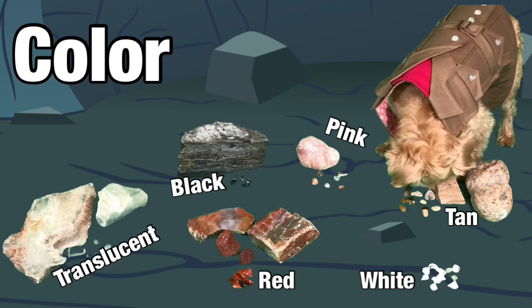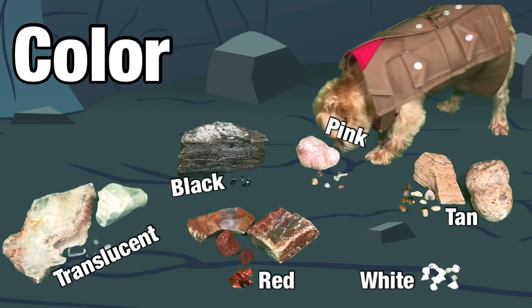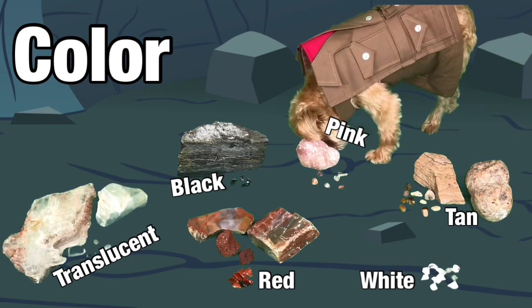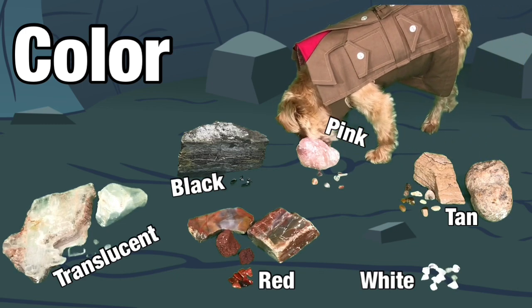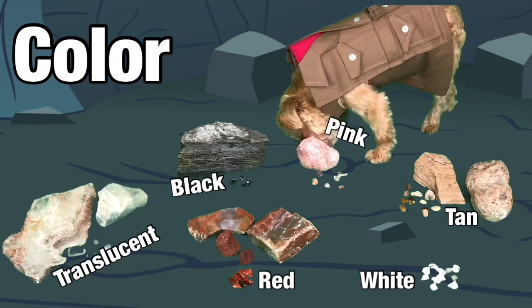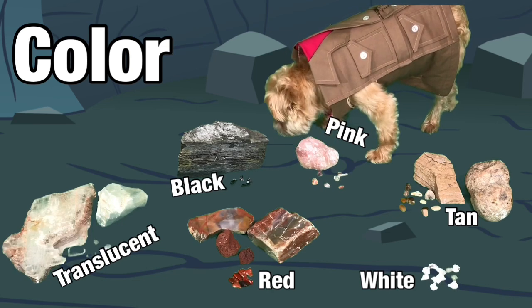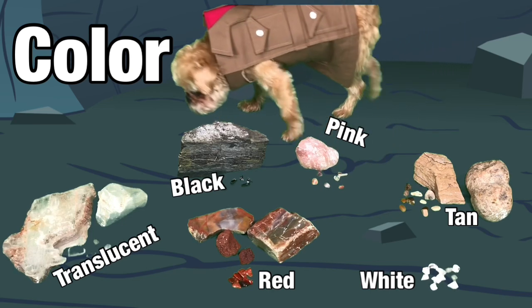These rocks are sorted by their physical property color. There are rocks that don't seem to have a color, a term called translucent. We have also sorted black, pink, red, tan, and white rocks.